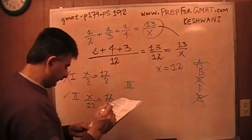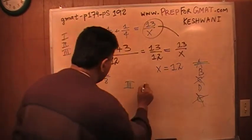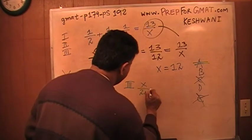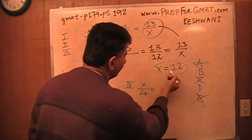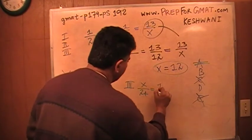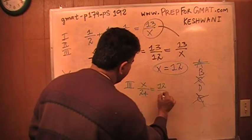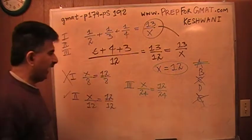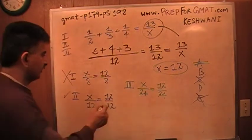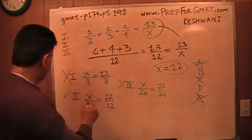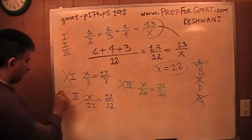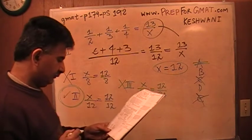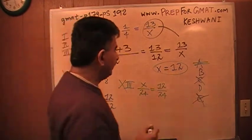The last statement says X over 24. Our X we found to be 12. So 12 over 24 is not an integer — that's one half, that's not an integer. So it looks like the only statement that works is statement number 2. The answer is B.